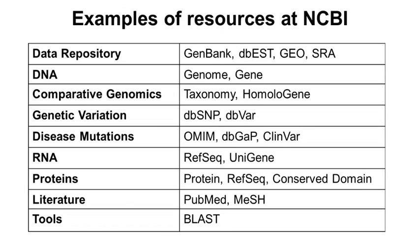Proteins and annotations are available in Protein, RefSeq, and Conserved Domain. Many of you have used PubMed to search for literature. MeSH is a hierarchical controlled vocabulary to represent the citations in PubMed. The most widely used tool at NCBI is the BLAST suite of tools. Now let's look at a few of them in a little bit more detail.